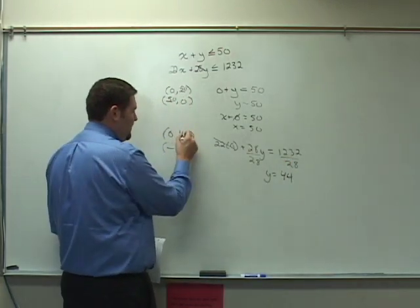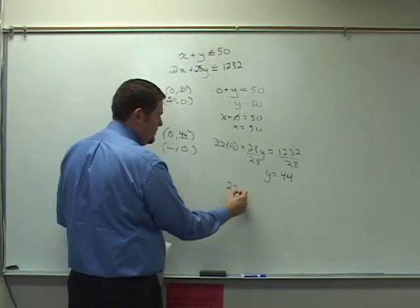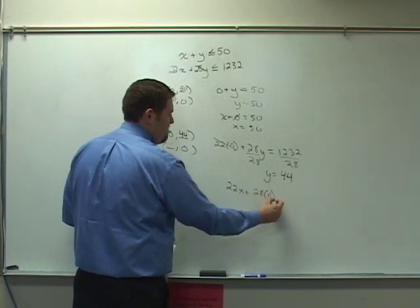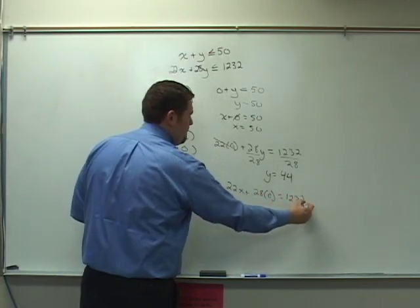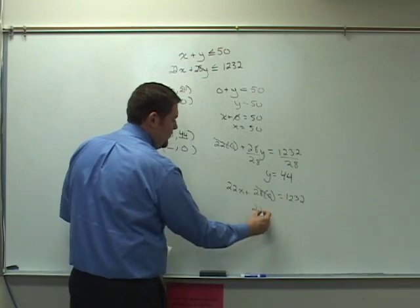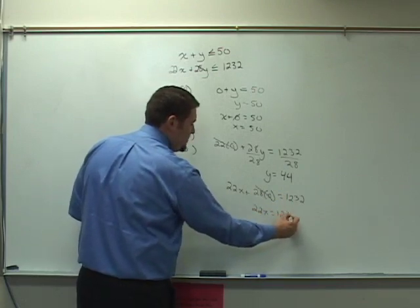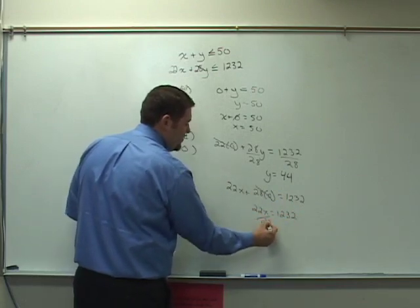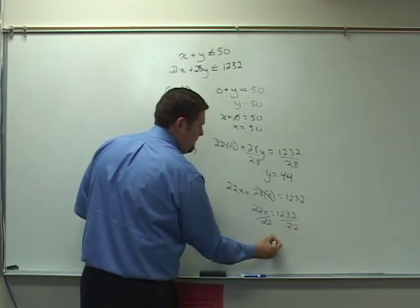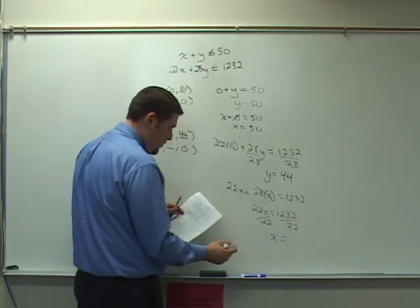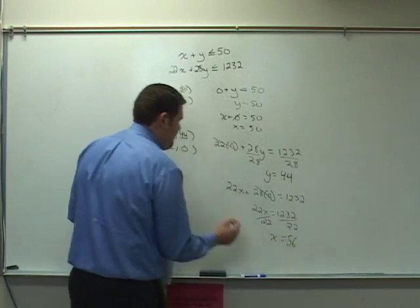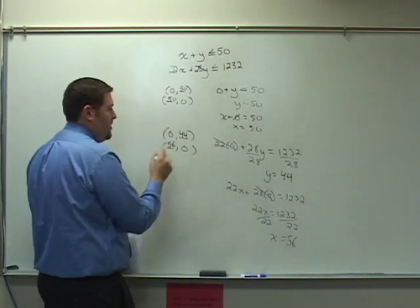Repeat the process for when y equals 0. So here we go. I have 22x equals 1232 divided by 22. I get out that x is going to equal 56.